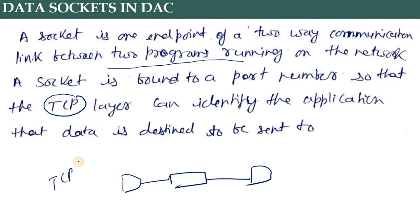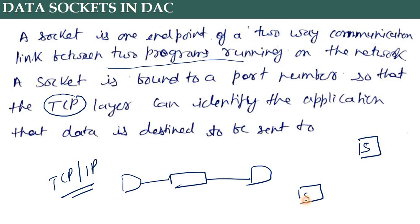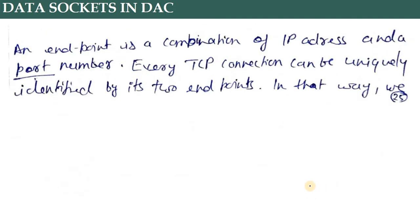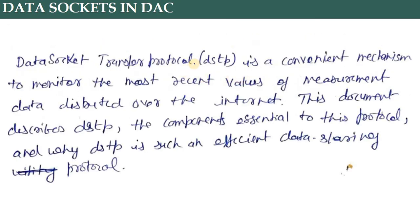TCP/IP — you know all these things for your computers. We have a server, a computer, a sensor, and a microprocessor connected in this chain. An endpoint is a combination of an IP address and a port number. Every TCP connection can uniquely be identified by its two endpoints, and in this way we can connect the data sockets specifically.